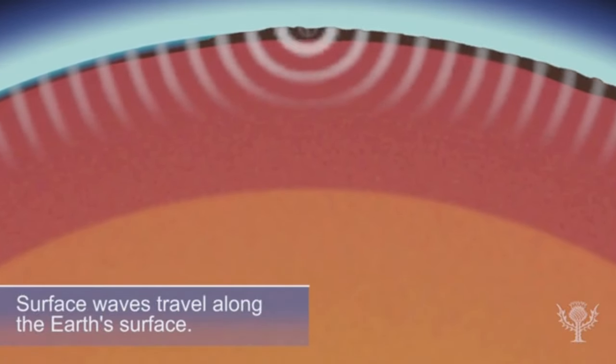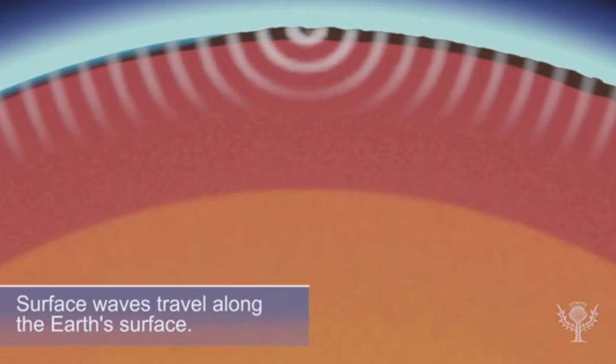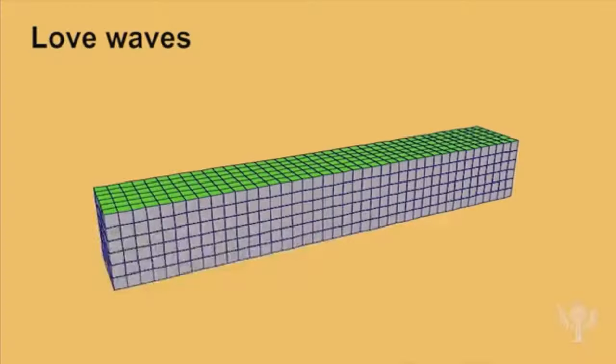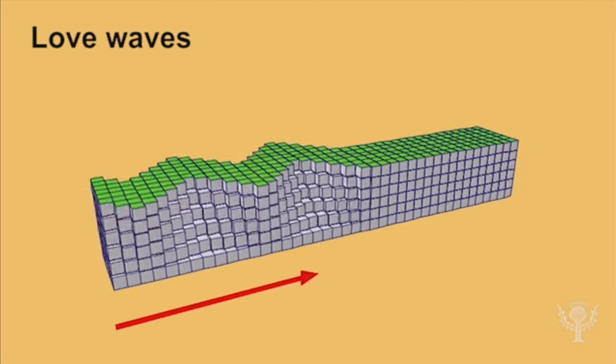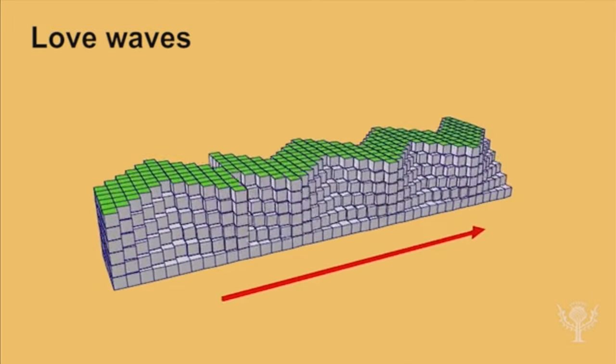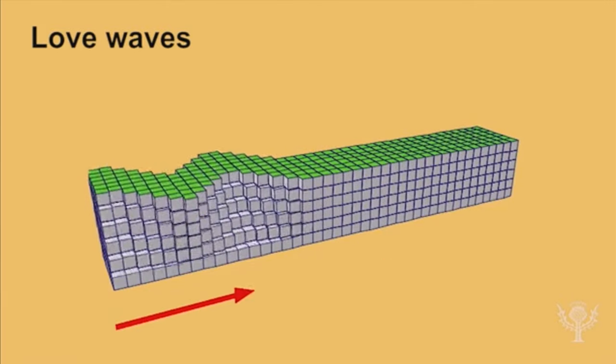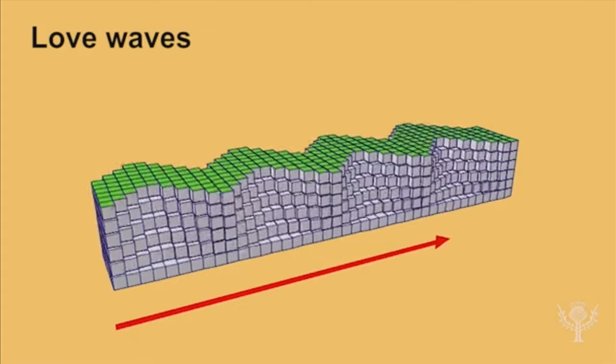The two types of surface waves are named love waves and Rayleigh waves after the scientists who identified them. Love waves have a horizontal motion that moves the surface from side to side perpendicular to the direction the wave is traveling. Of the two surface waves, love waves move faster.